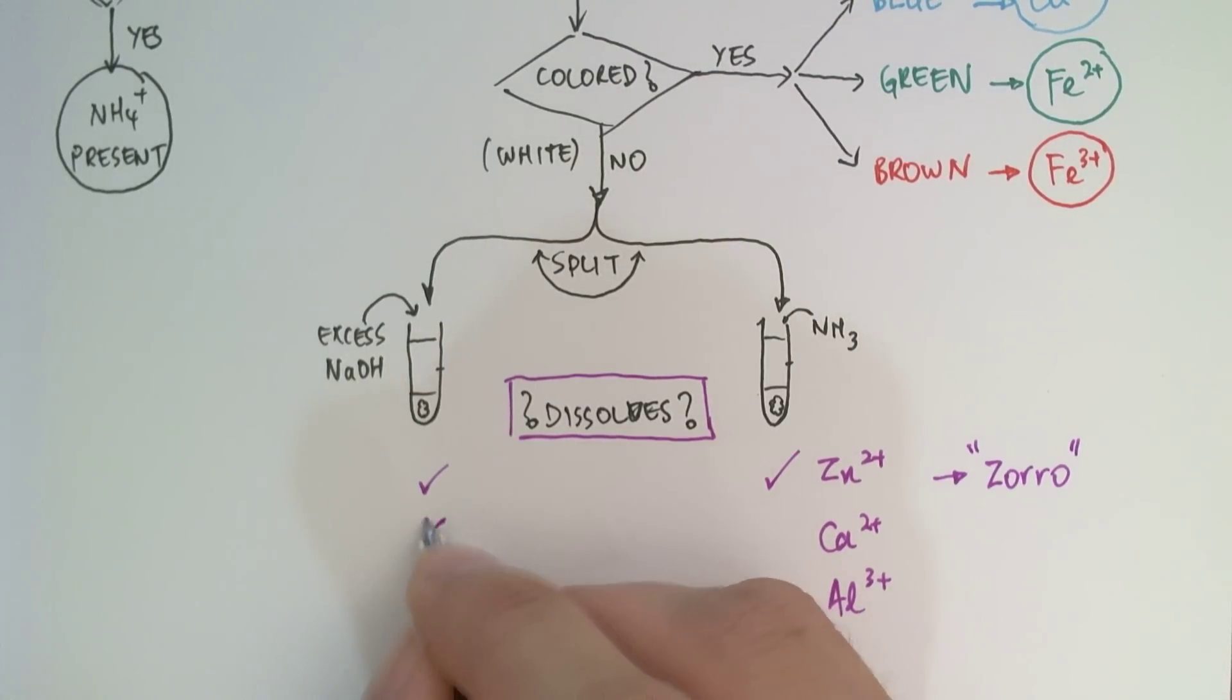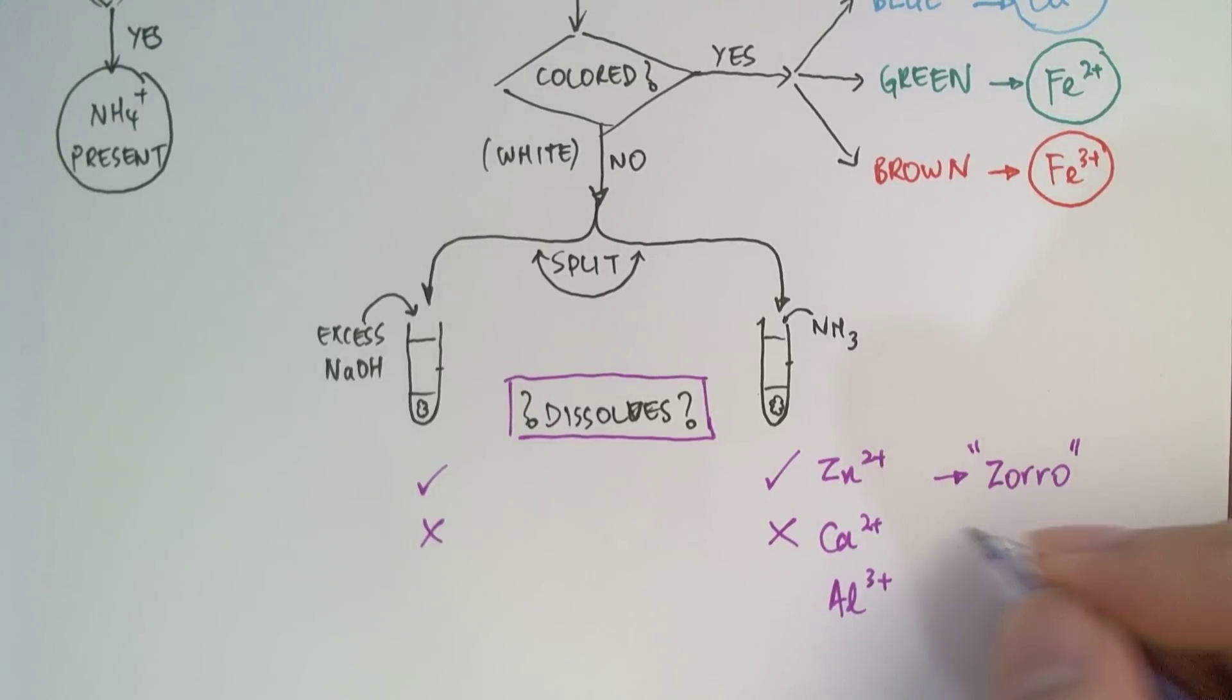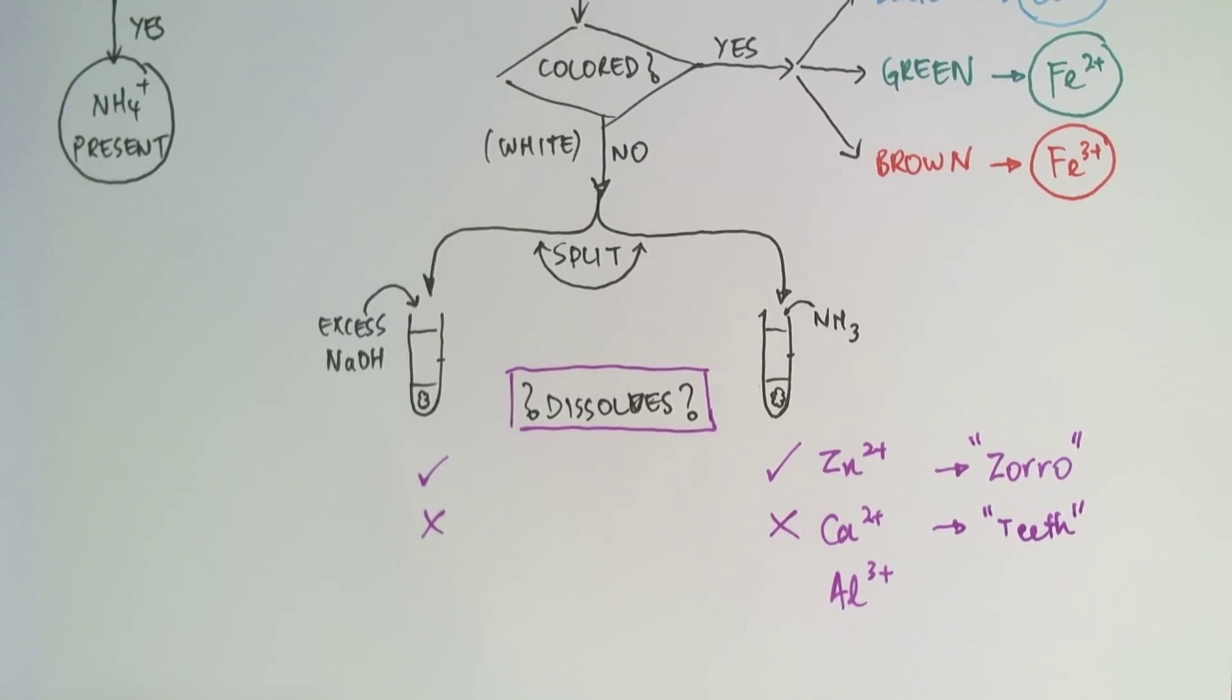Then onto calcium. Calcium doesn't dissolve in either excess sodium hydroxide or ammonia. So pouring this in, you'll still see the white gelatinous precipitate remaining in the solution. And the way I like to remember this is teeth because teeth is made of calcium and your teeth, in particular enamel, is the hardest substance in the human body. So it's really, really hard to dissolve. Hence, it doesn't dissolve in anything.